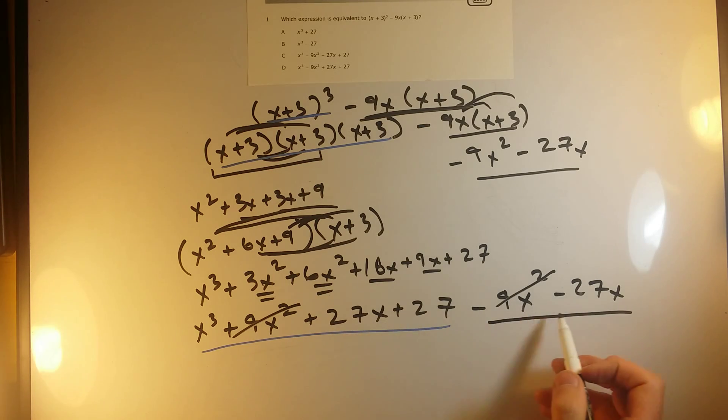Okay, 27x minus 27x. 27 minus 27 would be 0. So I would end up with a 0x. These would cancel out. And I'm just left with x cubed plus 27.